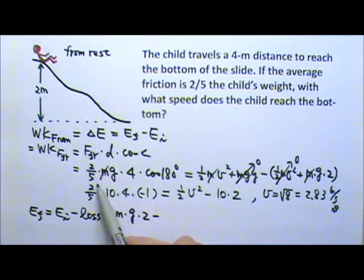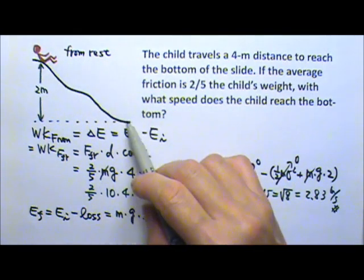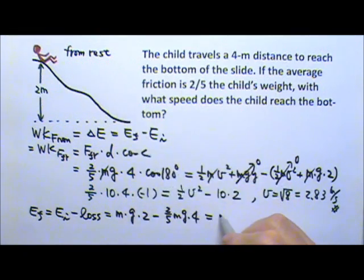The loss will be the amount of energy taken away by friction, so it will be friction times the displacement. Just the amount part is the force, 2 fifths mg times the displacement, 4 meters. This would equal to the final mechanical energy. At the bottom of the slide, the child only has 1 half mv squared. So cancel the m and then solve for v, you'll get exactly the same thing.